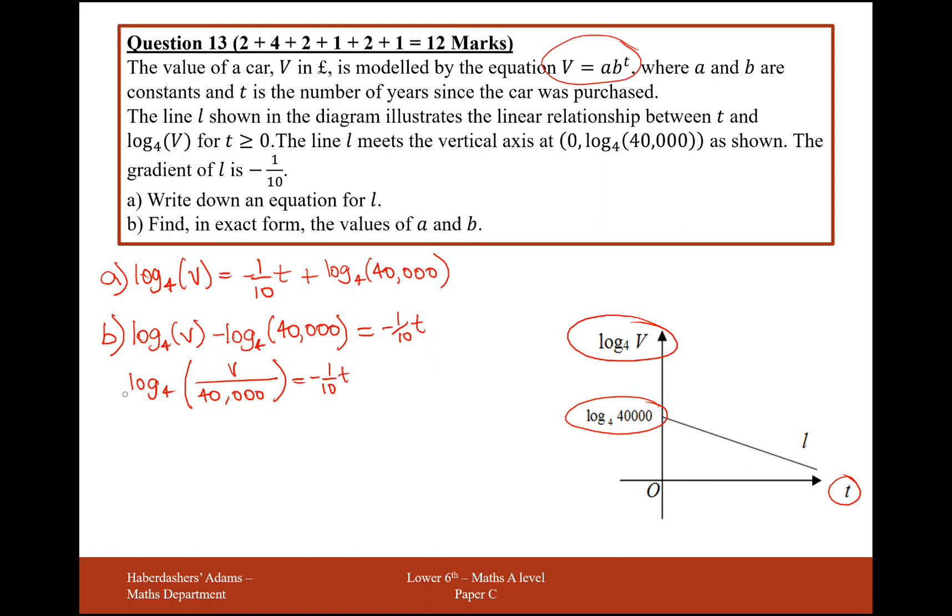And what we're going to do now, to get rid of this log base 4 here, is we're going to do 4 to the power of both sides. That will get rid of the log 4, so v over 40,000 equals 4 to the power of minus a tenth t. So v equals 40,000 times 4 to the power of minus a tenth t, which is great.